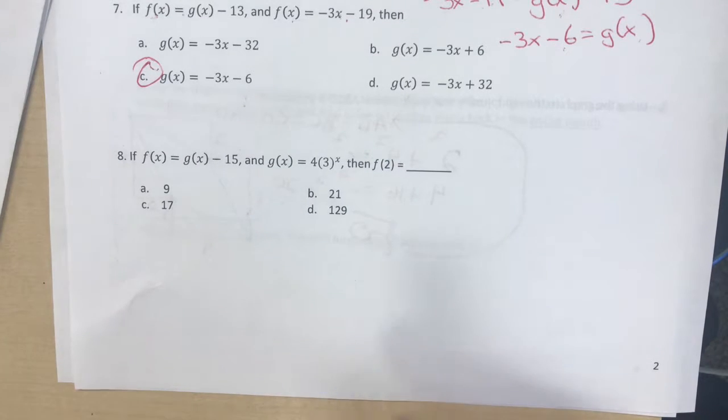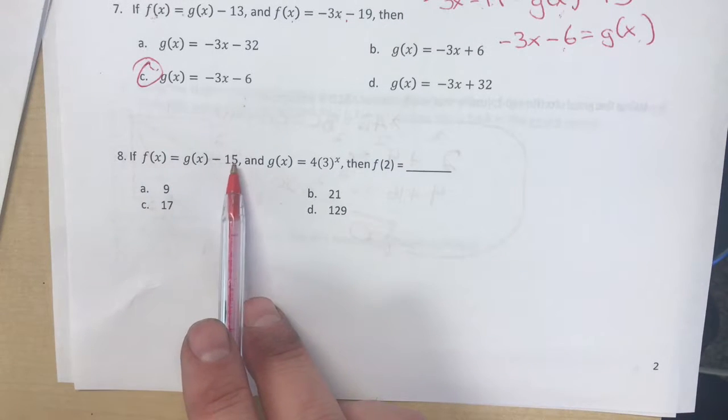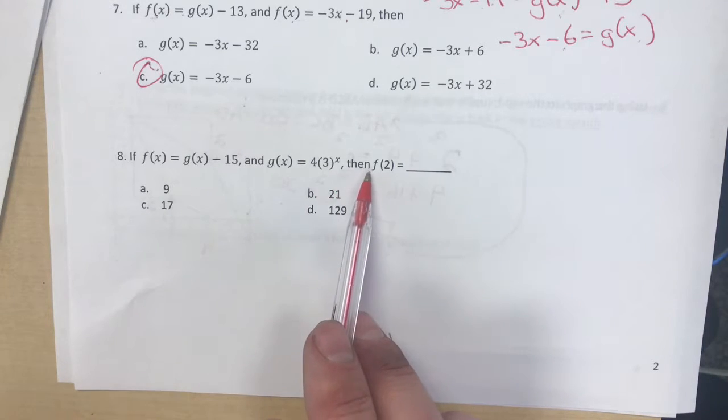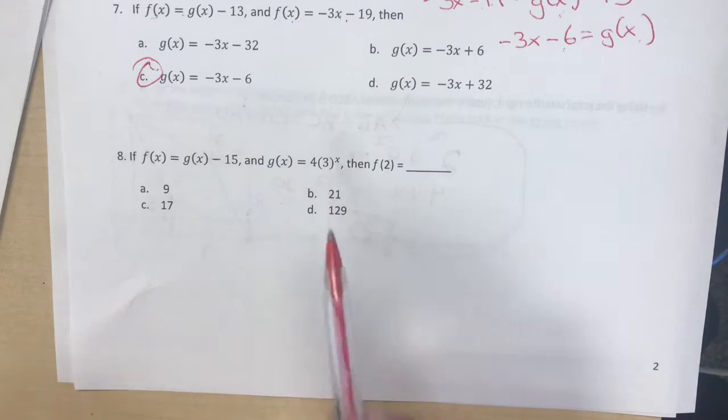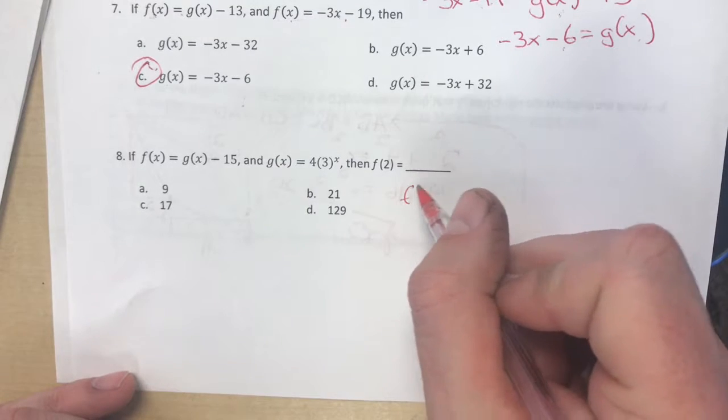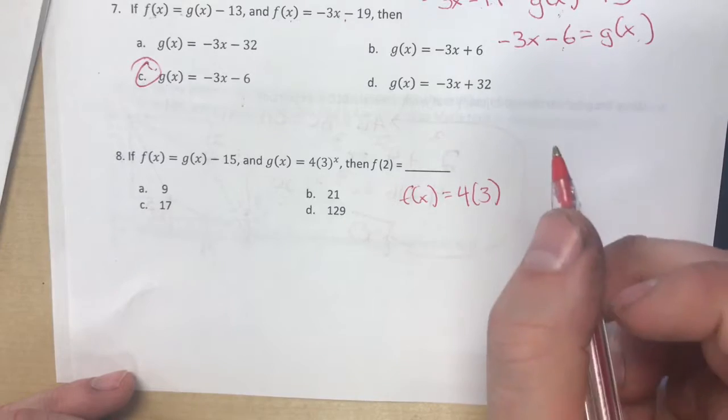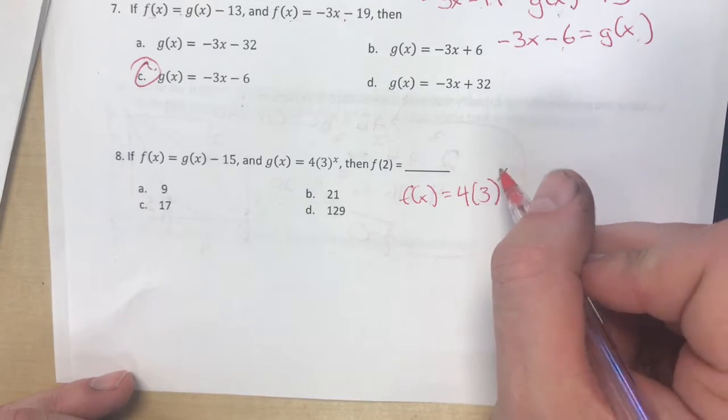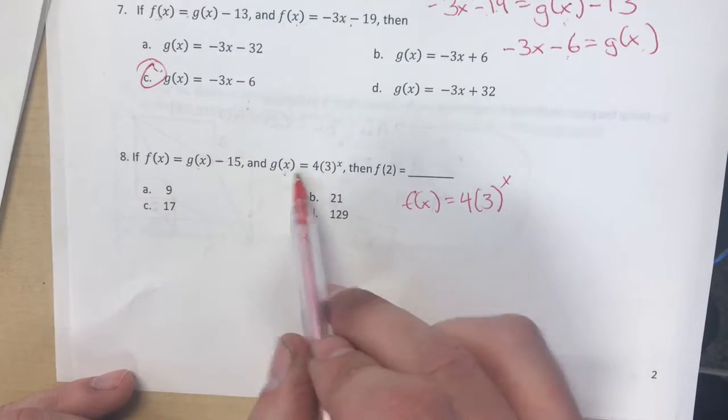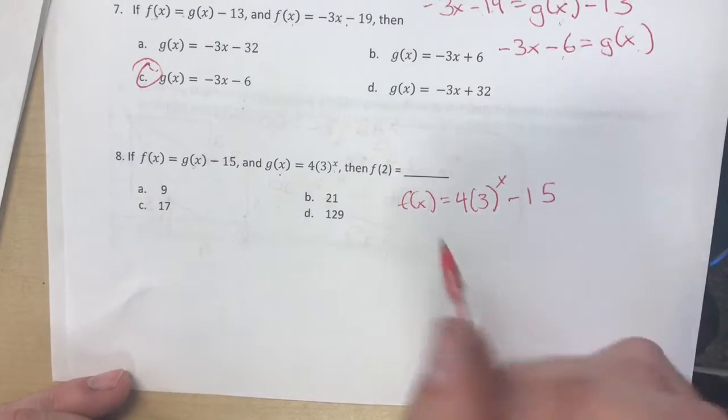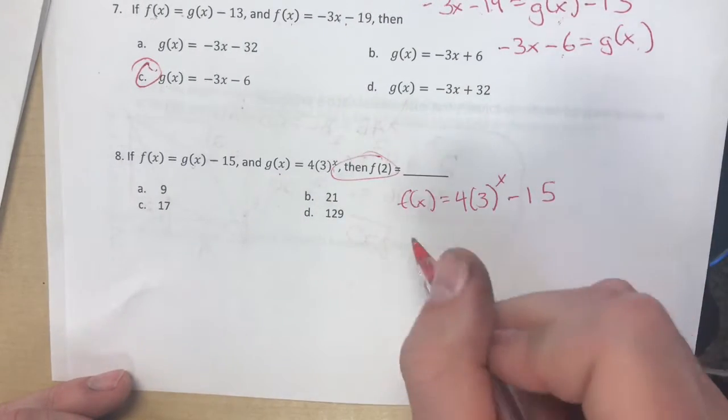Number 8, if f(x) is g(x) minus 15 and g(x) is this, then f(2) is what? So I would go f(x) is equal to 4 times 3 to the x. So I'm taking what g(x) is and putting it right here, minus 15. So now they want to know f(2).